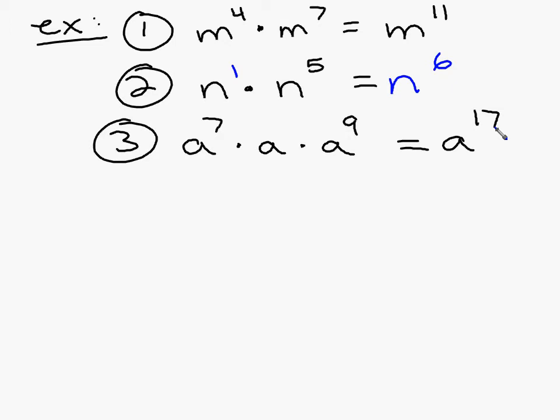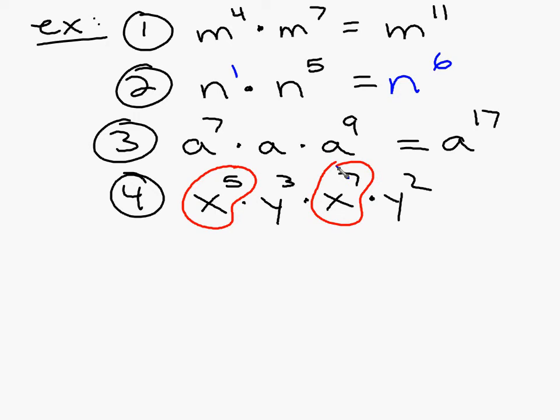You might also have one with more than one base like this. x to the fifth times y to the fifth times y to the third times x to the seventh times y squared. Something like that. Now, if you have one like that where you have more than one base, you can only add the ones that have like bases. So I'm looking at this x term and this x term. So what's five plus seven? Twelve.